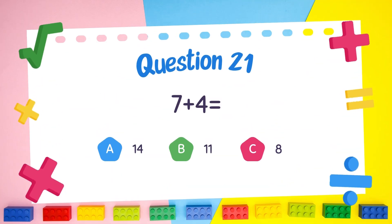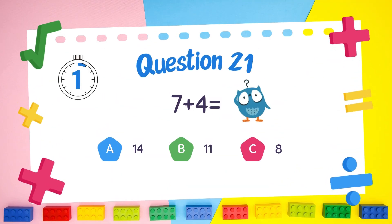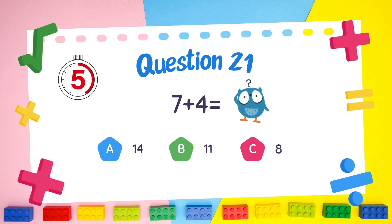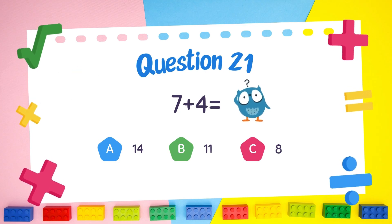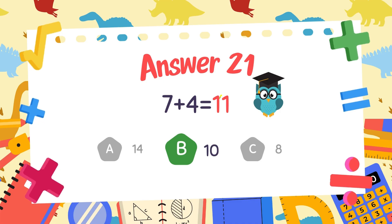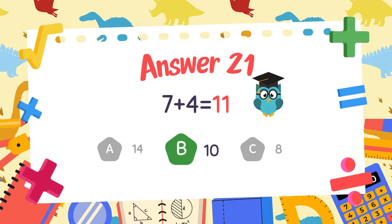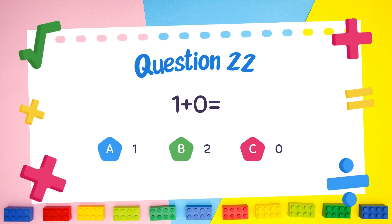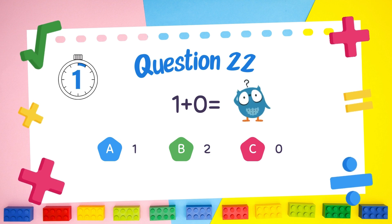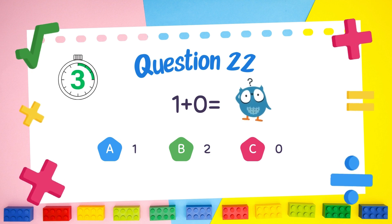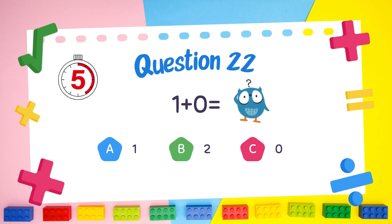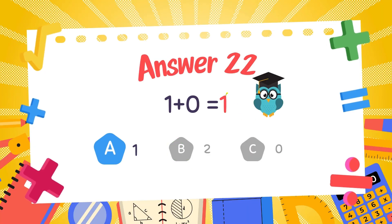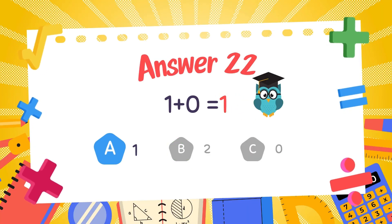What is 7 plus 4? The answer is 11. What is 1 plus 0? The answer is 1.